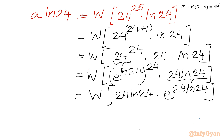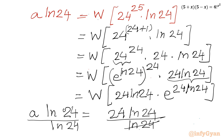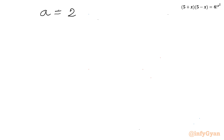So applying the Lambert W function gives us: W of 24·ln 24 times e^(24·ln 24) equals 24·ln 24. Therefore left hand side a·ln 24 equals 24·ln 24. Dividing both sides by ln 24, we get a equals 24. Now since a was defined as 25 minus x squared, and a equals 24, we have 25 minus x squared equals 24.